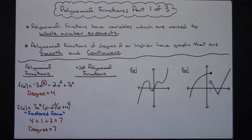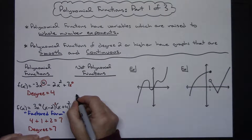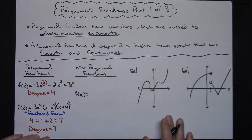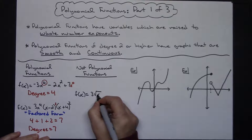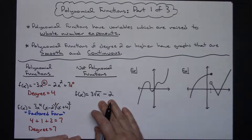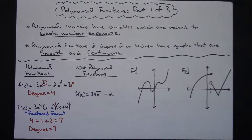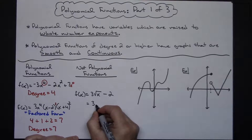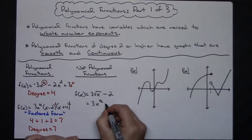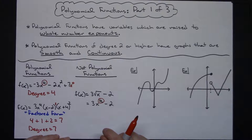Now let's take a look at some equations that would not be polynomial functions. How about something like f(x) equals 3 times the square root of x minus 2? You might not initially see the exponent, but anytime you've got a radical you can rewrite it in exponential form. So that becomes 3x to the one-half power minus 2. As soon as I do that I see an exponent of one-half. One-half is not a whole number, therefore this is not a polynomial function.